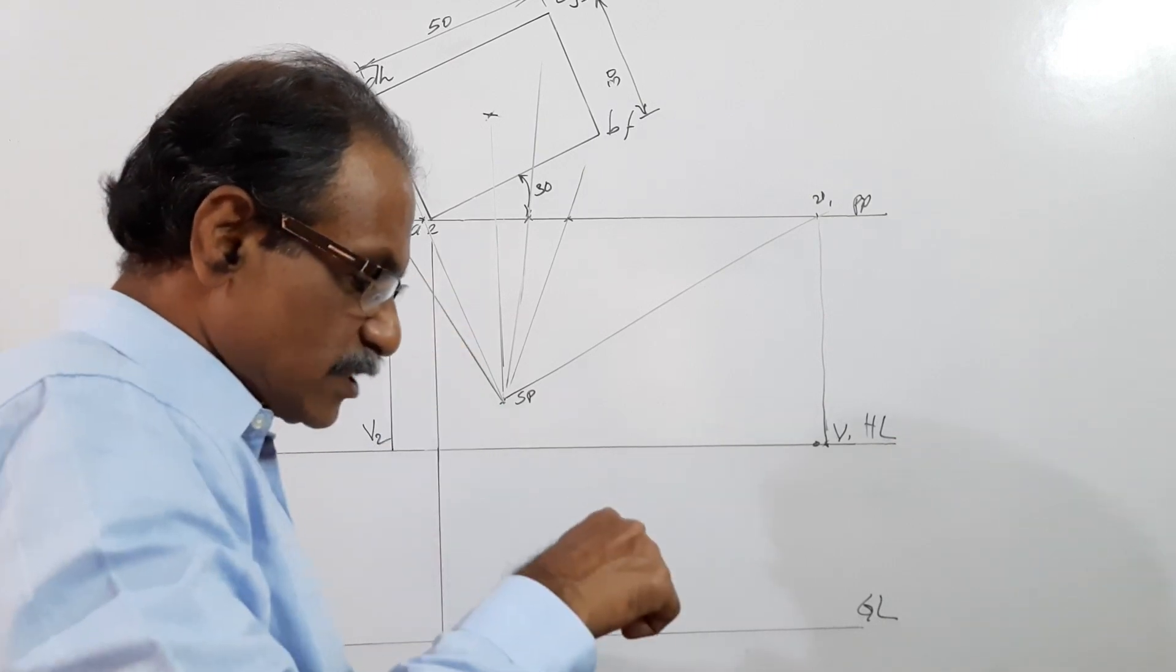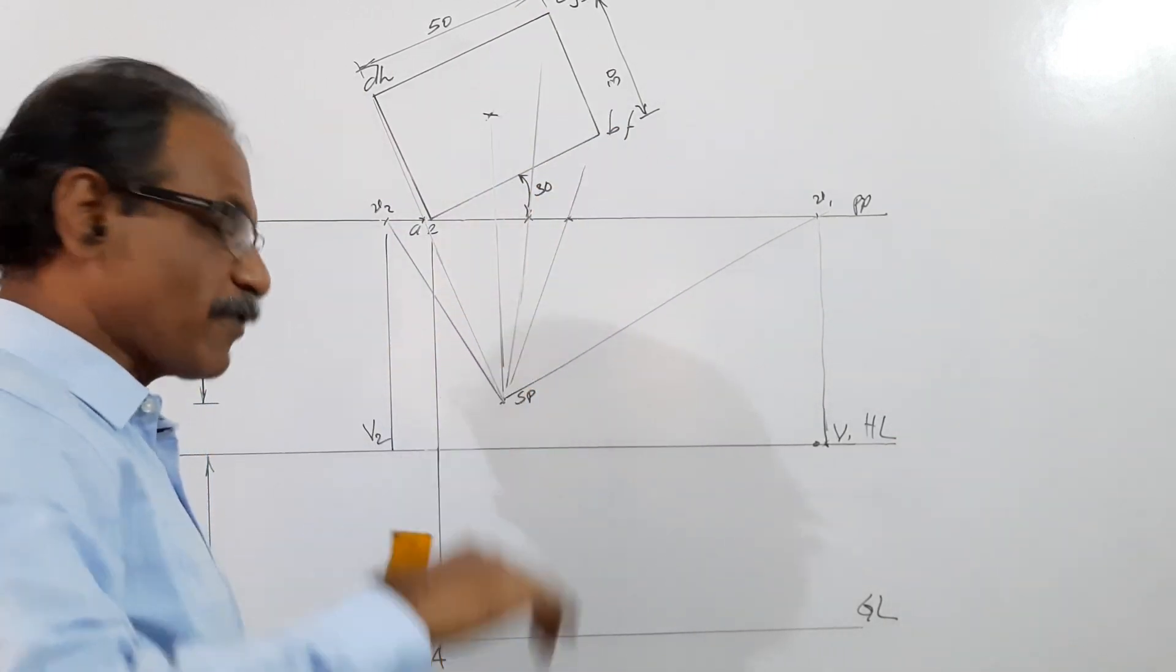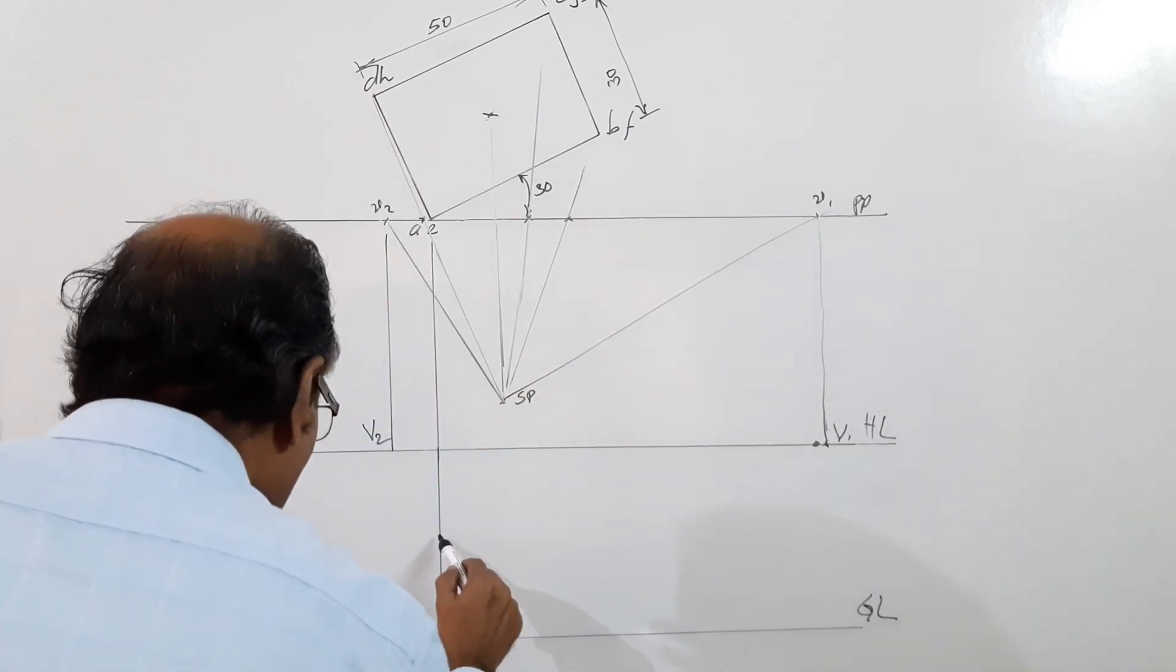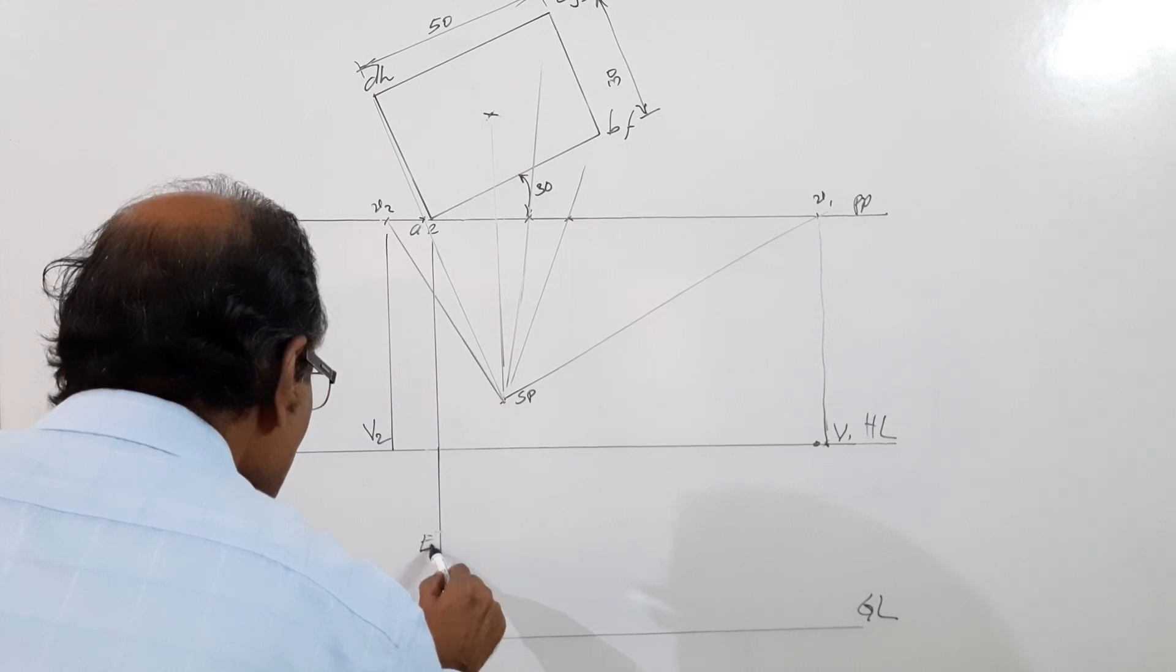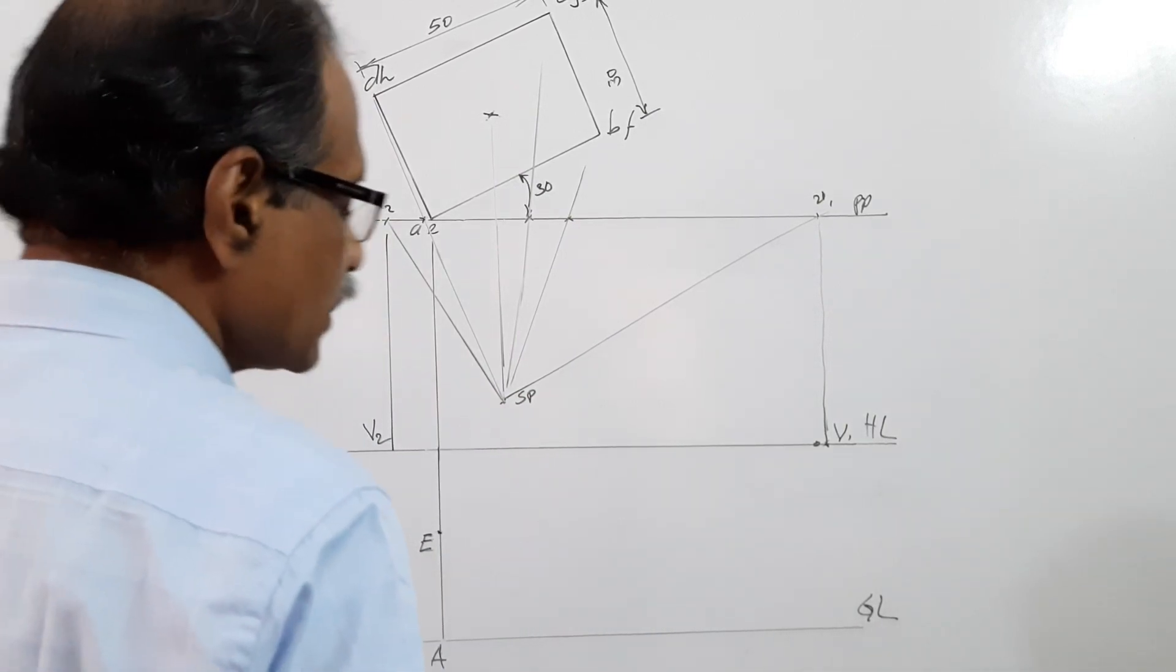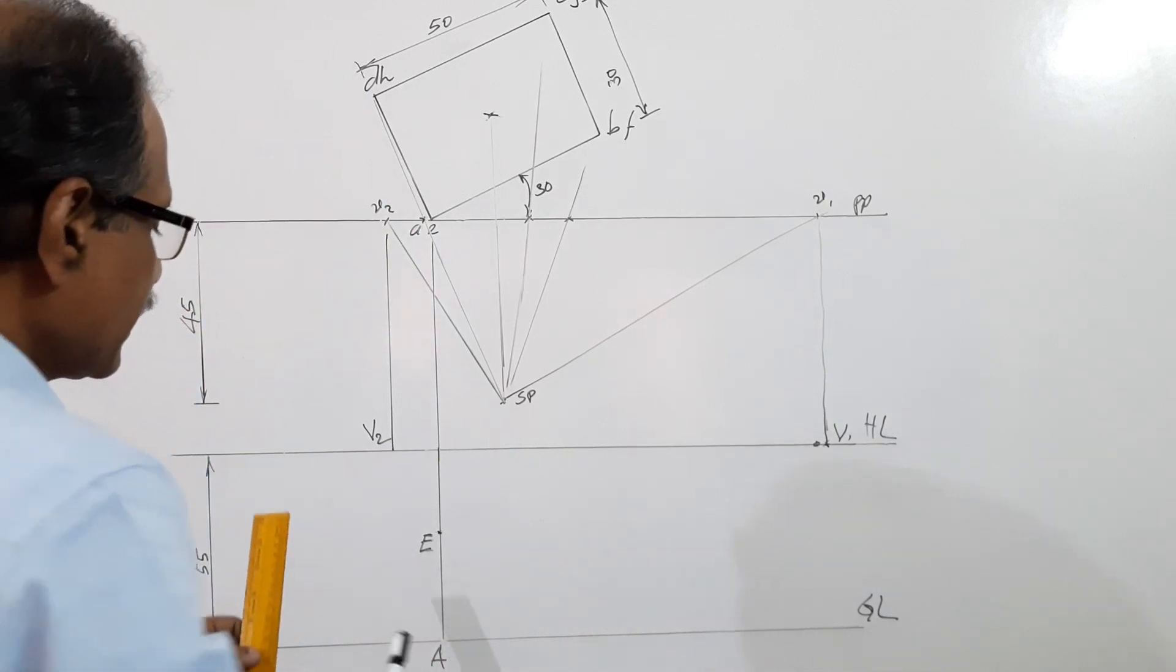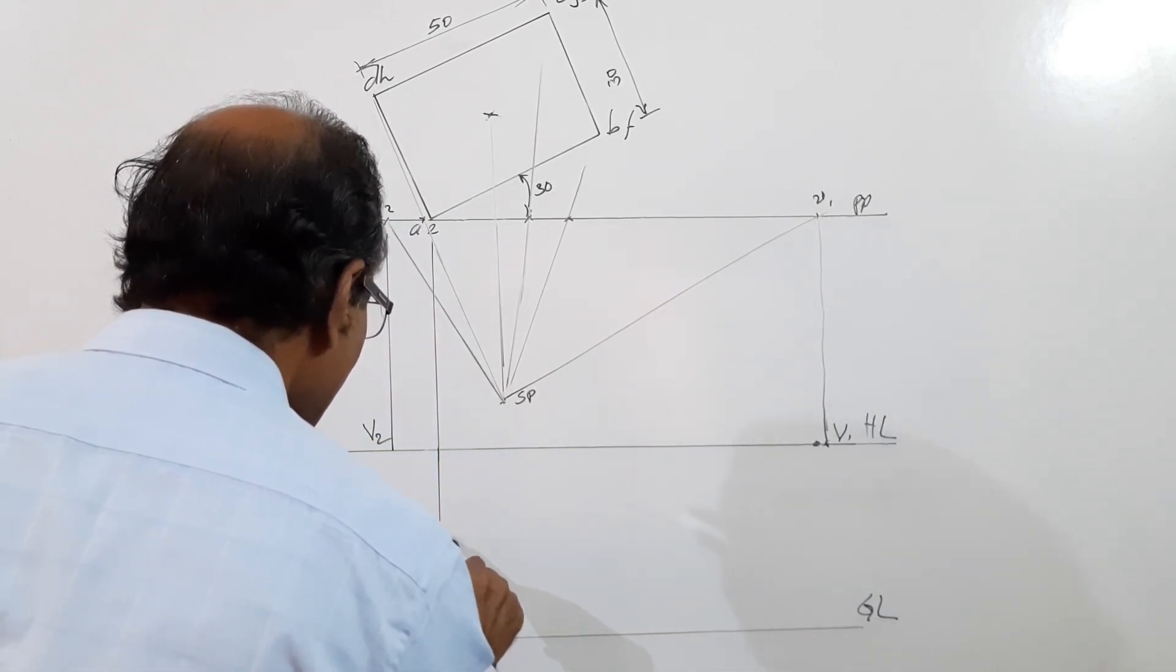Now the height of the box is 25. The dimension is 50, 30, 25. So I measure that 25 up and locate E. Then I connect A and E to both vanishing points.